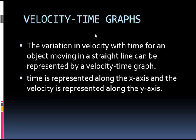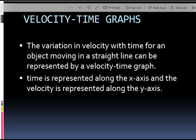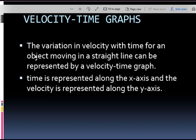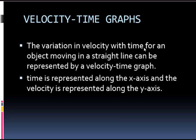In a velocity-time graph, the variation in velocity with time for an object moving in a straight line can be represented by a velocity-time graph. So if the velocity varies with respect to time, it can be represented by a velocity-time graph. Time is represented along the x-axis and velocity is represented along the y-axis.